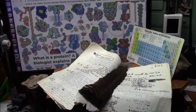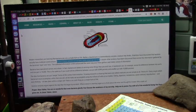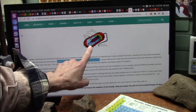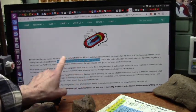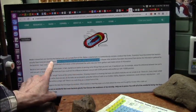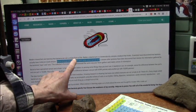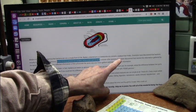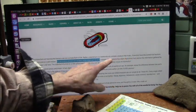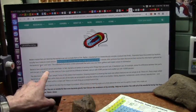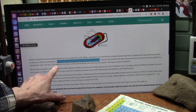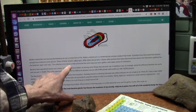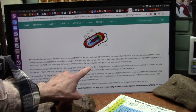Let's take it from the top. I'm going to make this really simple because it is simple. There's a bazillion different types of bacteria. Modern researchers are learning that bacteria are not a simple form of life. A bacterium is a tremendously complex creature that thinks. Scientists have discovered that bacteria actually have molecule-sized sensors. Some of these sensors act as eyes while others act as ears.